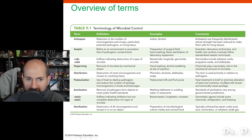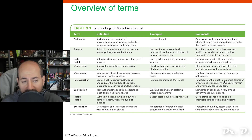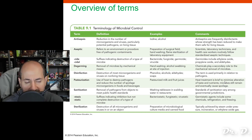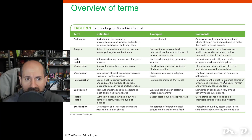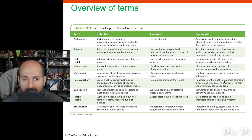When you are dealing with microorganisms, you need to be able to control their growth — to kill them or stop their growth. There are various terms you need to know: What's the difference between antisepsis, disinfection, pasteurization, sanitation, and sterilization? They all sound similar, but they are distinctly different things.